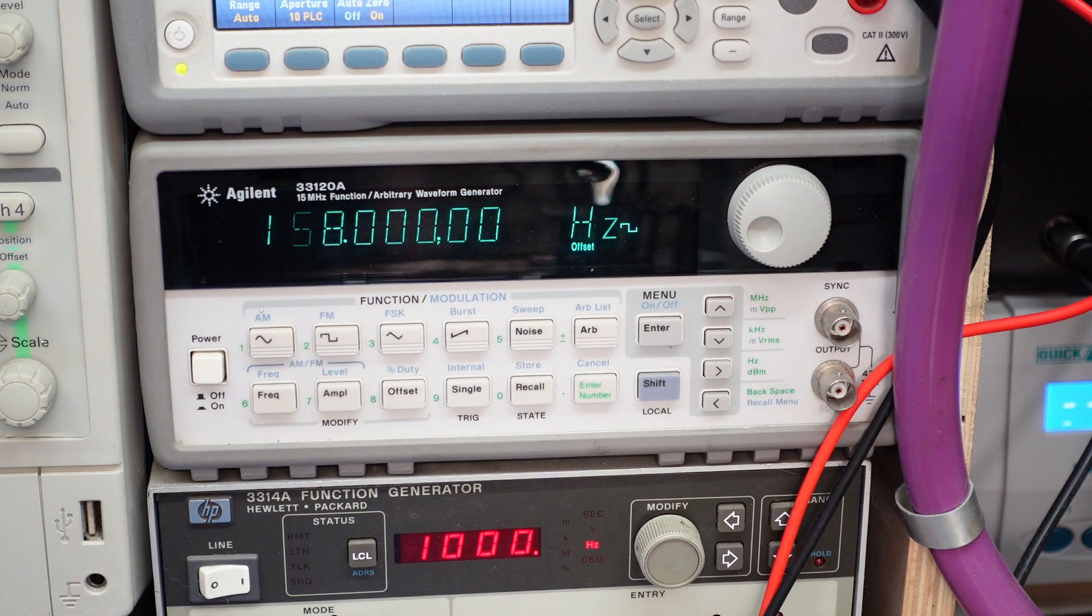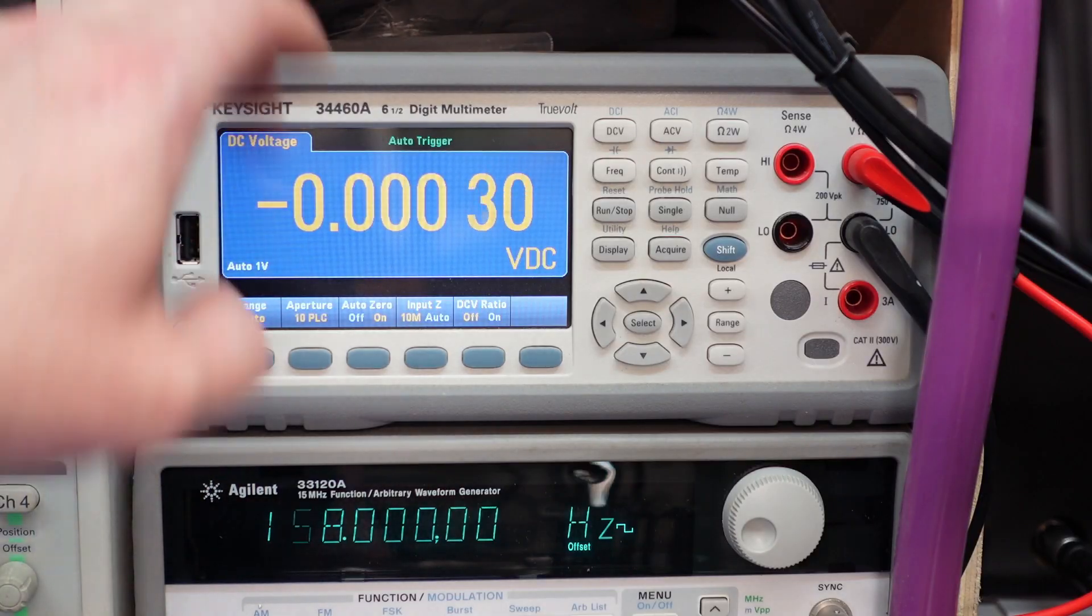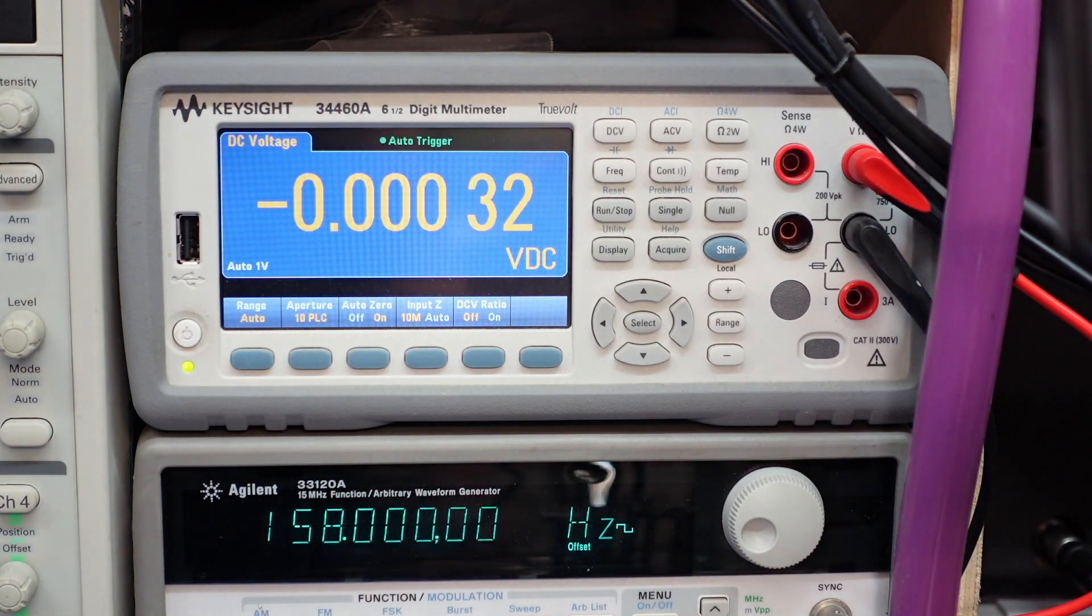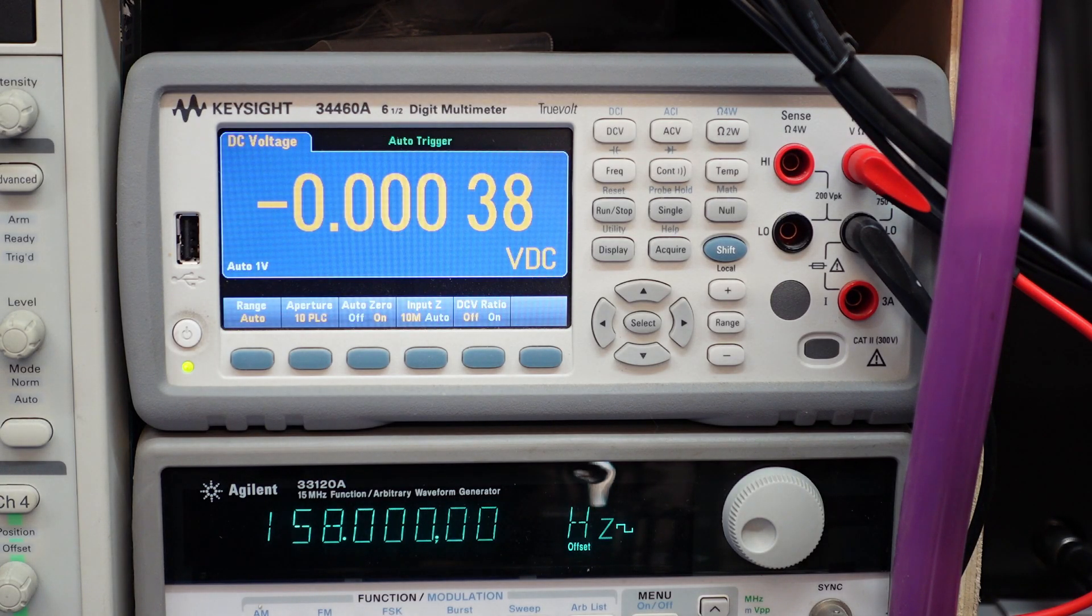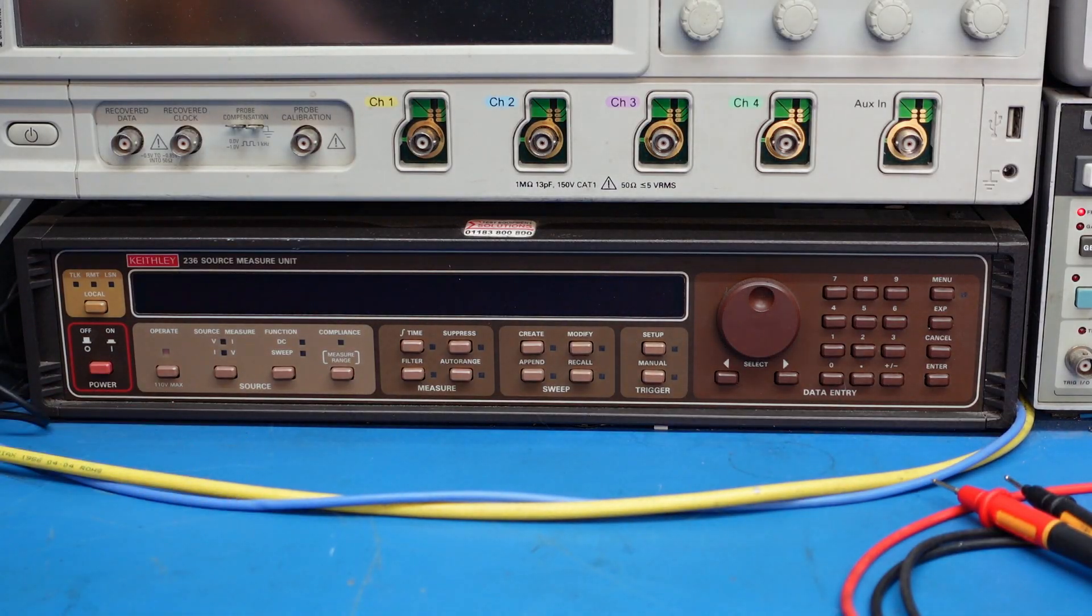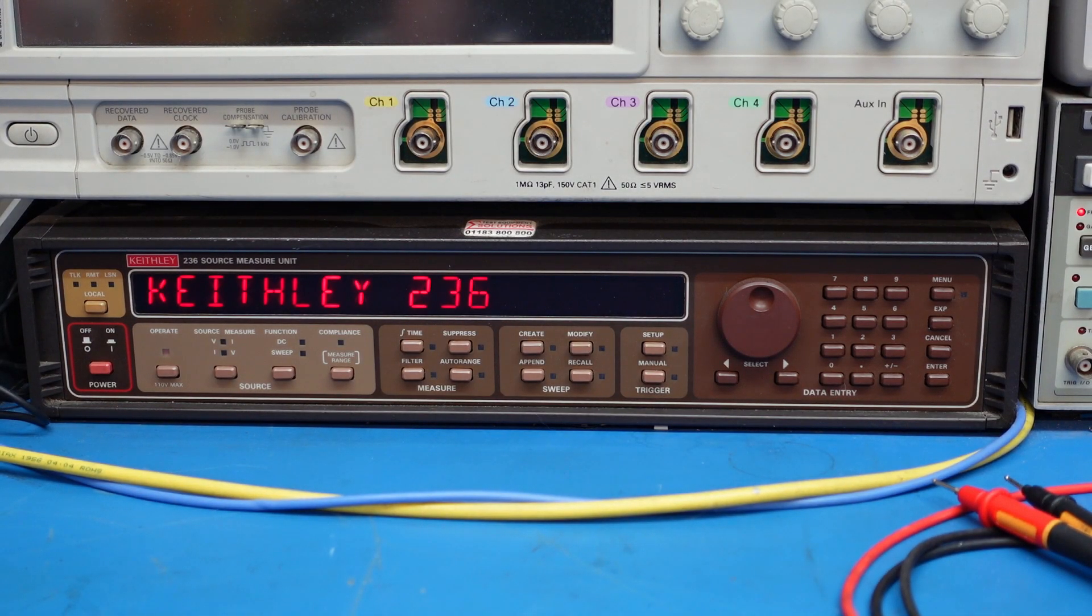And this is one of the newer bits of equipment I've got, the Keysight brand. All the same stuff, just renamed. So this is the 34460A—a really nice multimeter. Then there's a Keithley 236 source measure unit, quite old but a good one.